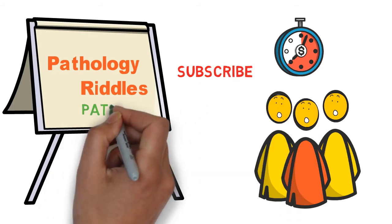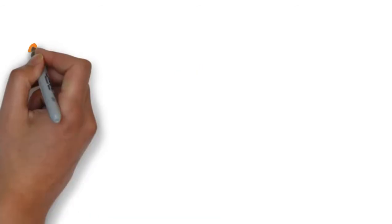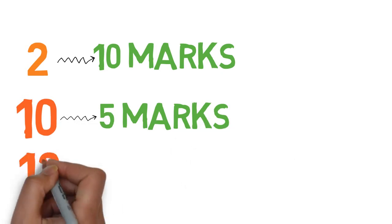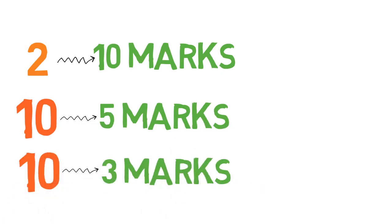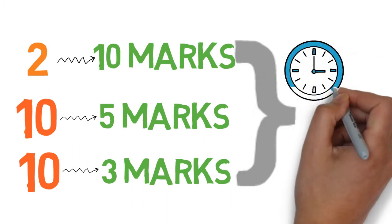We begin with the pattern of the paper which is followed in most universities. Usually, there are 2 10-mark questions followed by 10 5-mark questions and then there are 10 3-mark questions. The time given to complete all the answers for these questions is 3 hours.